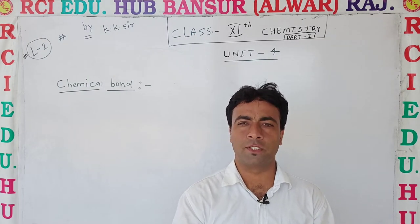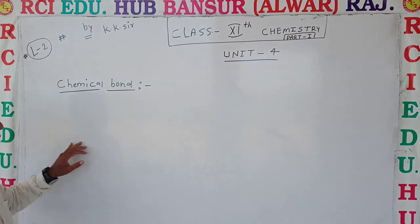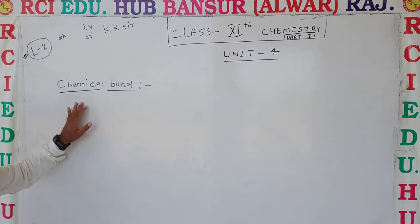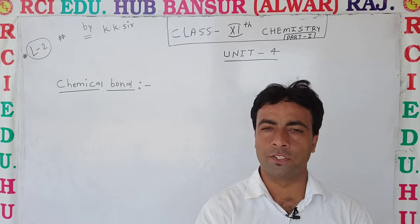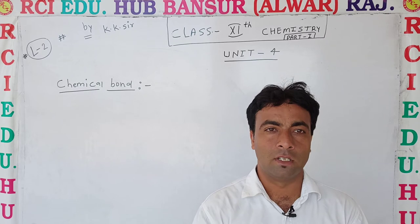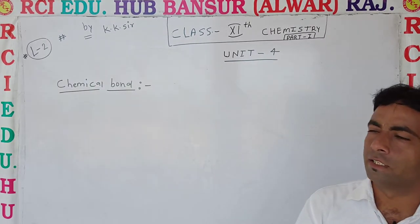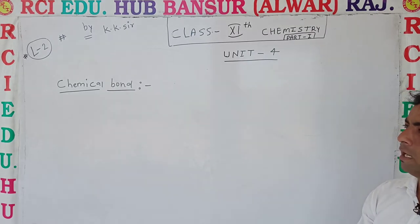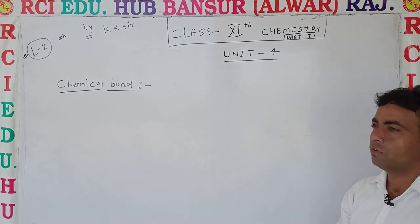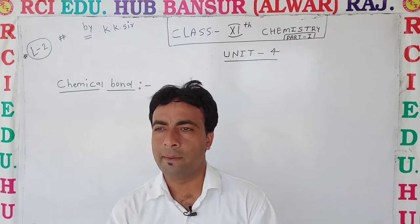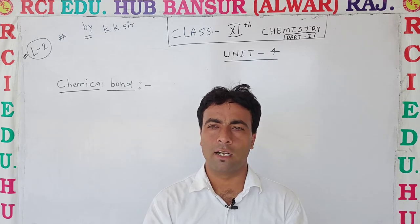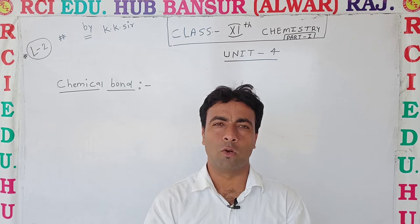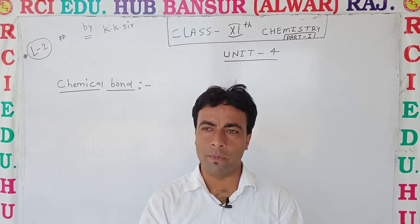Hello students, welcome to chemistry class. Today we study chemical bond — its definition — and there will be different theories given for the formation of chemical bond. We will see the introduction of bond, the basic structure of bond, then different theories: Lewis structure, VSEPR theory, valence bond theory, and finally molecular orbital theory.